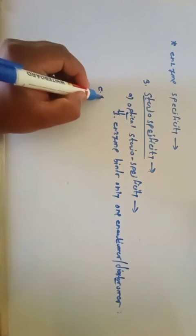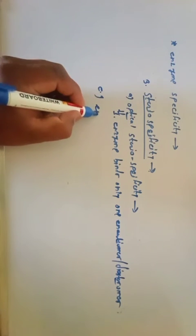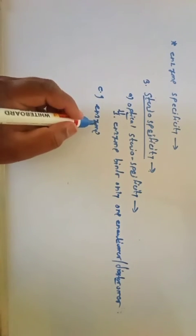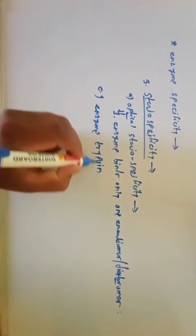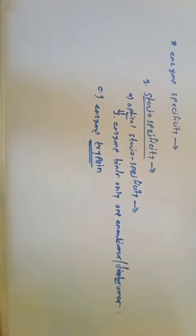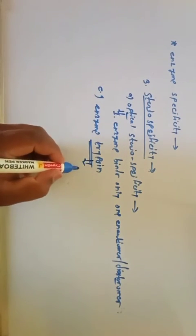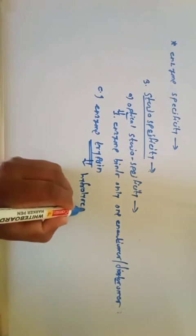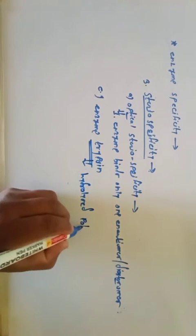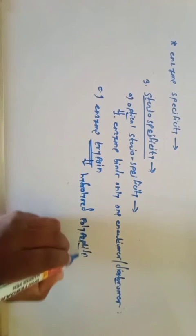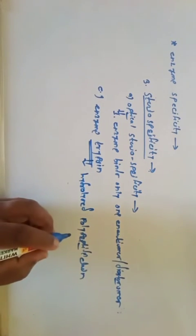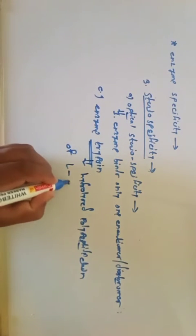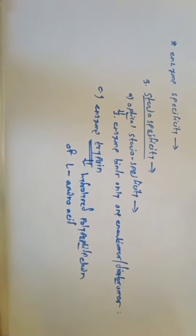The best example of optical stereospecificity is the enzyme trypsin. Trypsin hydrolyzes the polypeptide chain of L-amino acids only, but not those consisting of D-amino acids.